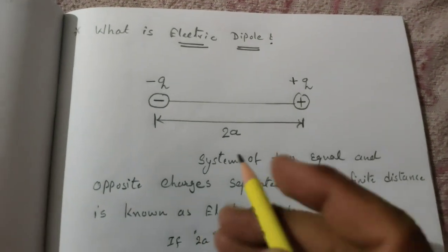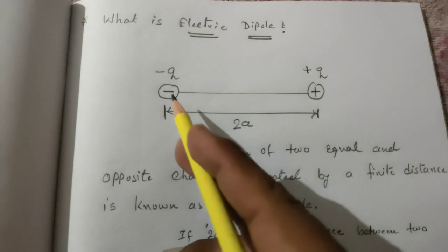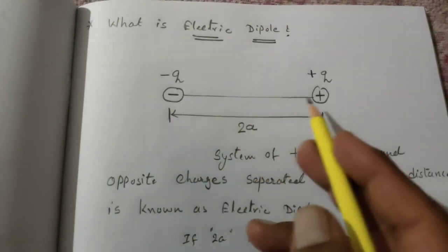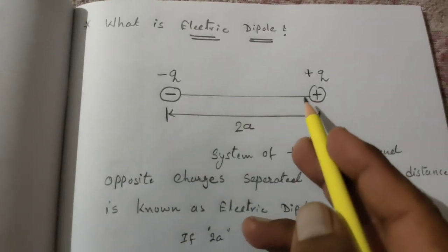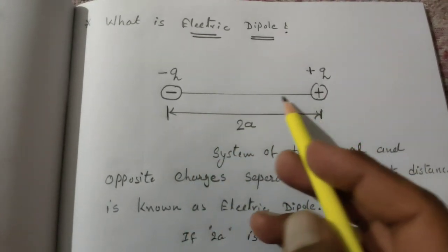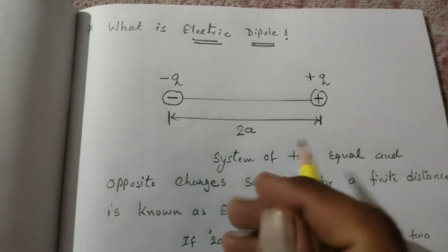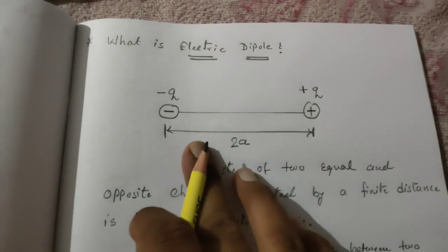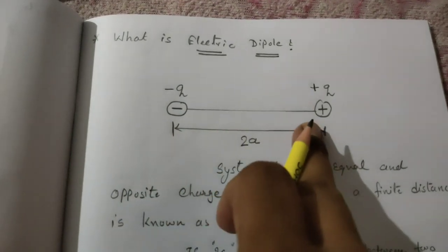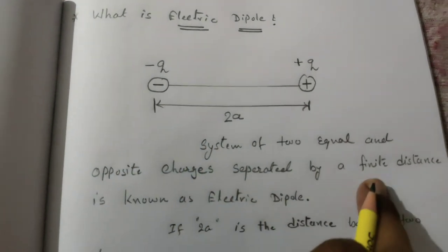Now, how is it defined? See, over here we have two charge particles which are at rest - two means di - and both are putting at its pole, so it is known as dipole.